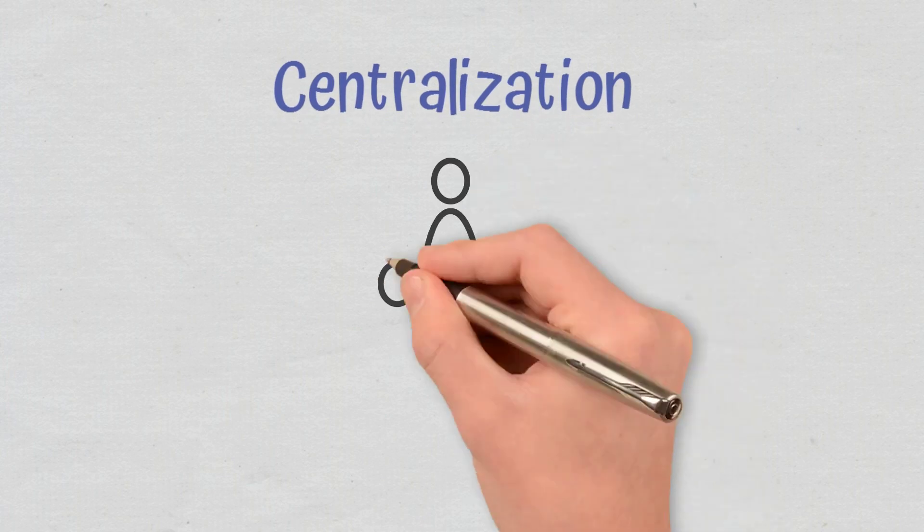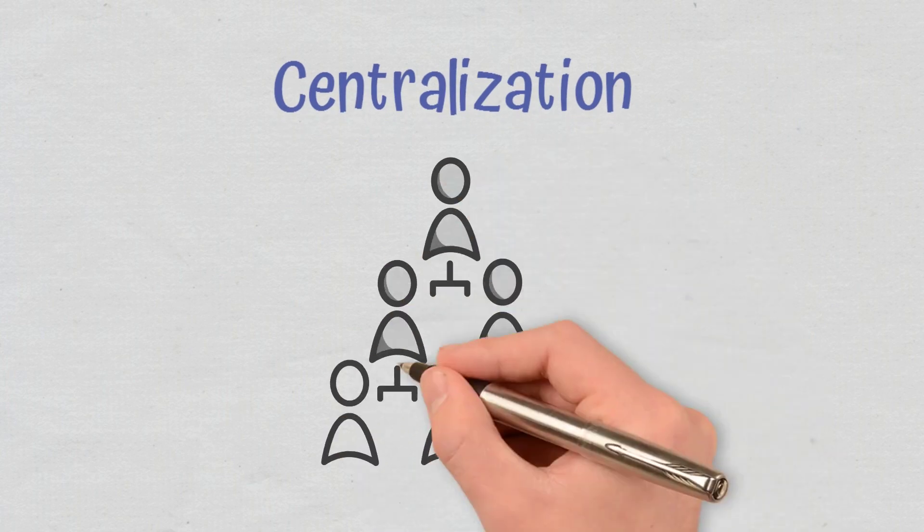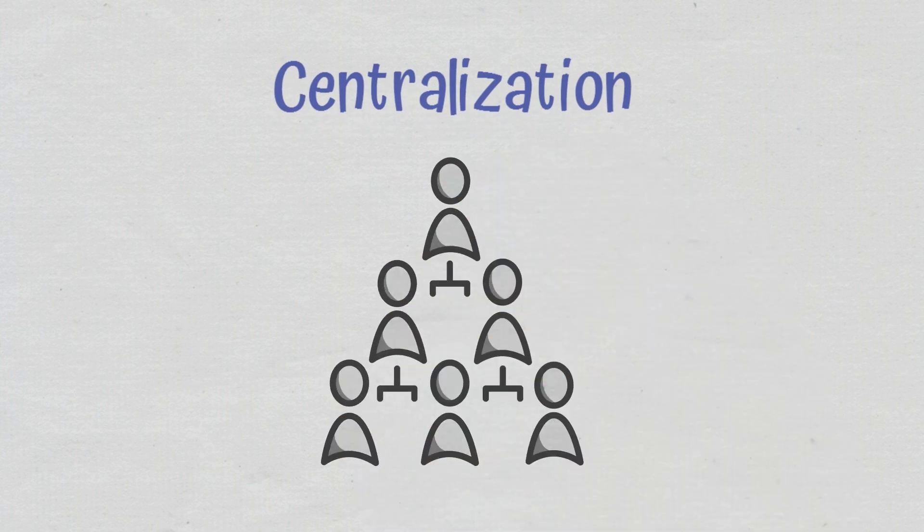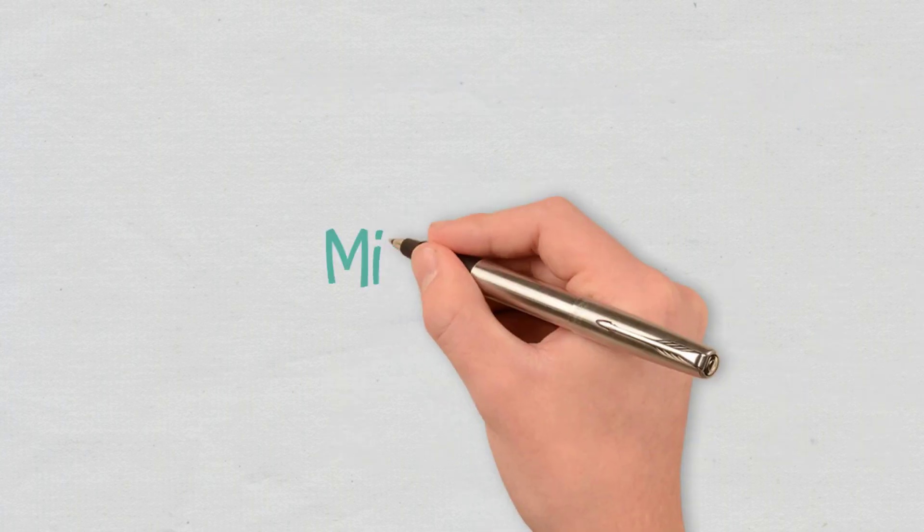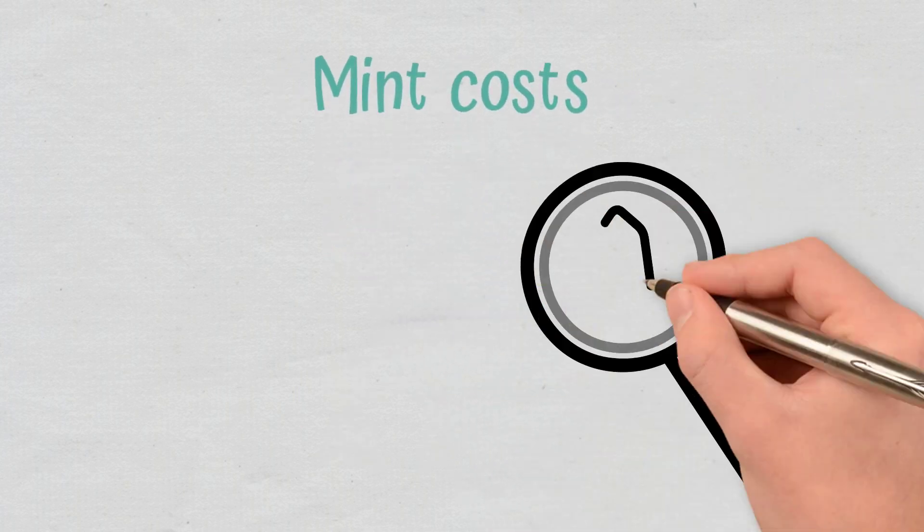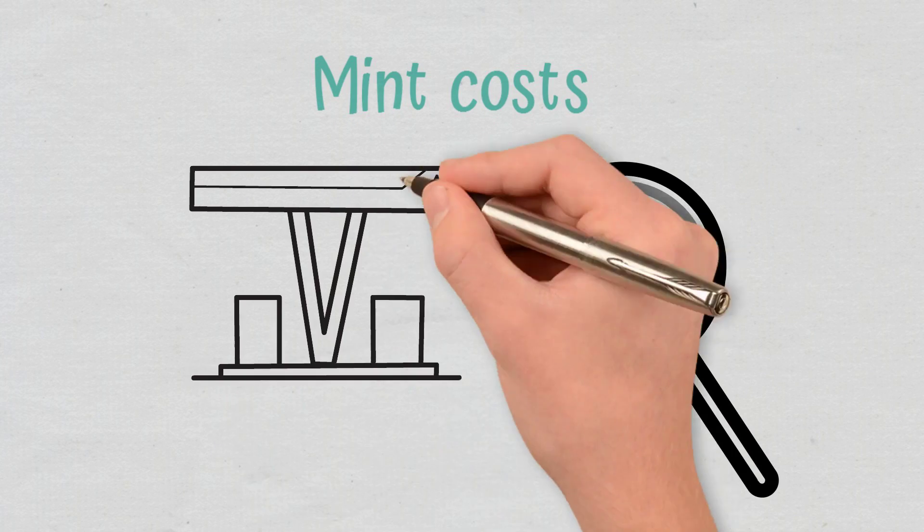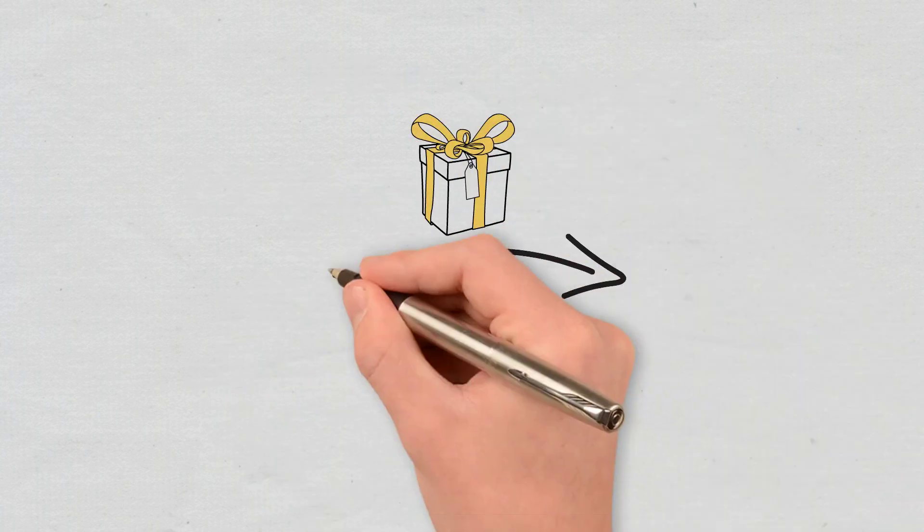Centralization. Wrapped tokens are issued by a custodian and are prone to centralization. Mint Costs. The minting process can be quite expensive due to high gas fees.